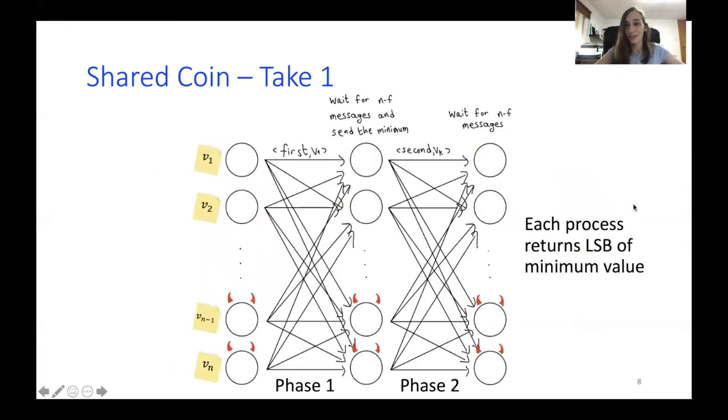So let's try and do take one of this shared coin. What we do is each process starts by executing a VRF and obtaining some initial value, some number V1, V2, and so on. And it sends it to all other processes during phase one. Then every process waits for n minus f messages, picks the minimum number it heard of, and sends it along in phase two. Then again, a process waits for n minus f messages, picks the minimum value it heard of, and returns the least significant bit of this minimum value.